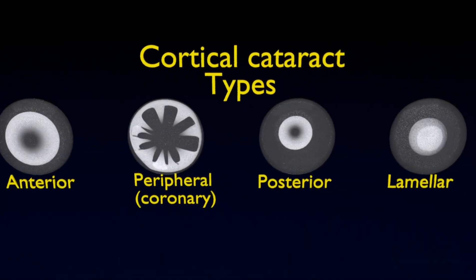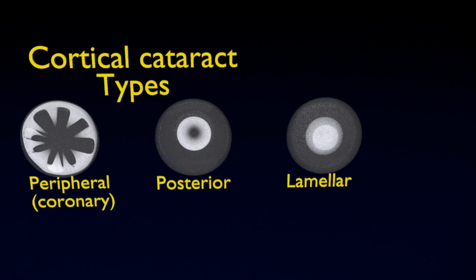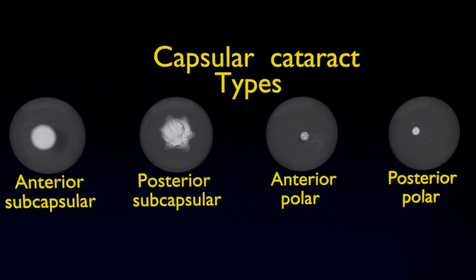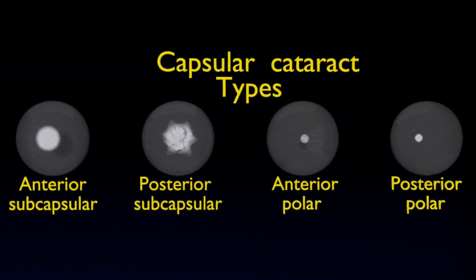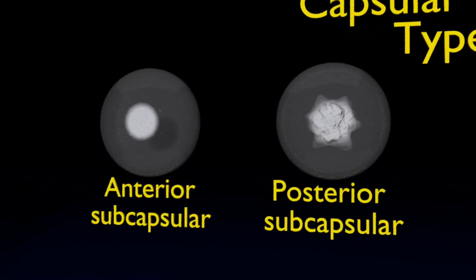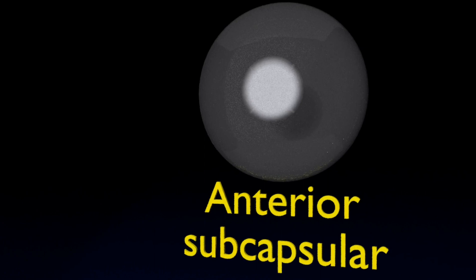Subcapsular cataract types: The anterior subcapsular involves the opacification in the anterior or frontal part of the cortex lens, as shown.